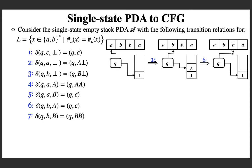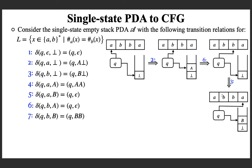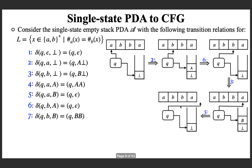Now which transition applies? The state is Q, input is B, and top of stack is bot — that is transition number 3. It says: replace bot with B bot. So bot is replaced with B bot and the read head moves right. Next, the state is Q, input is A, and top of stack is B — that is transition number 5. You pop symbol B, move the read head to the right, and the processing of the input string is complete.